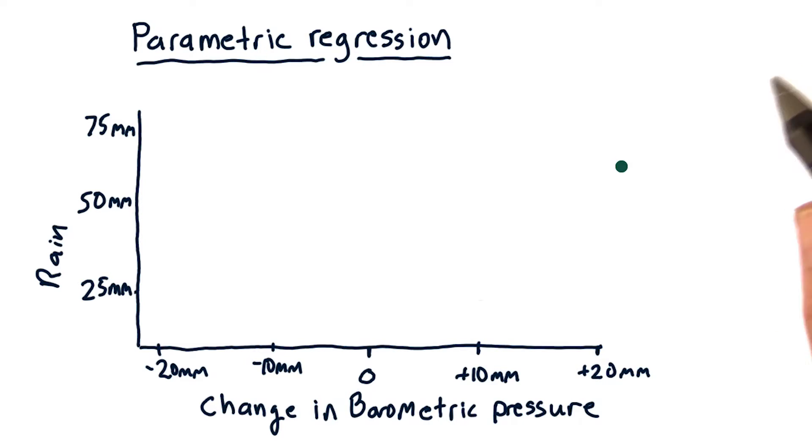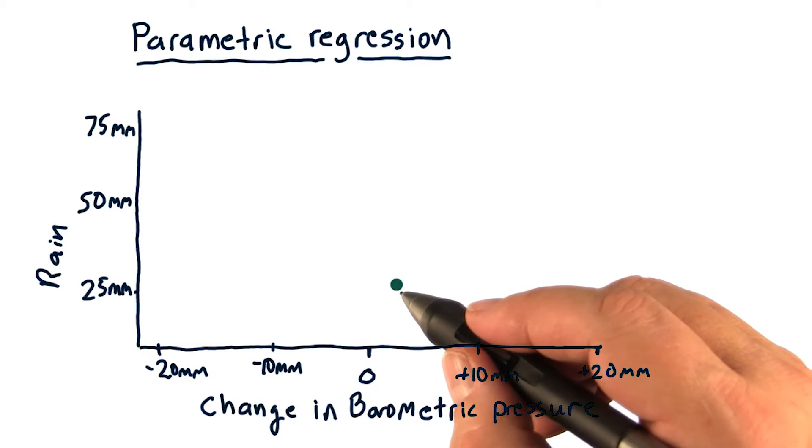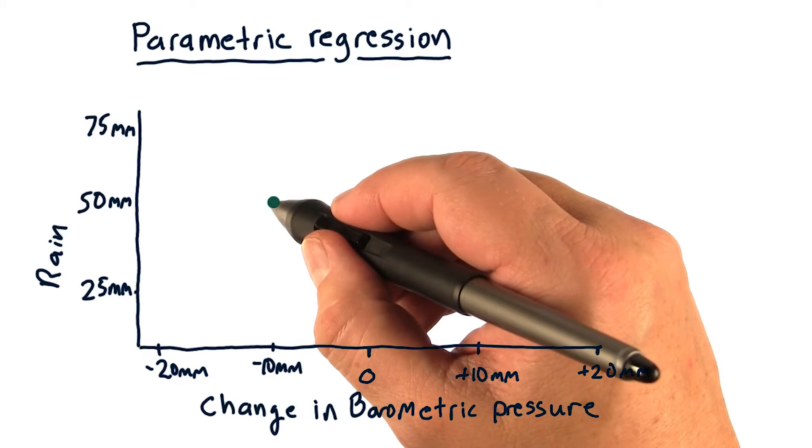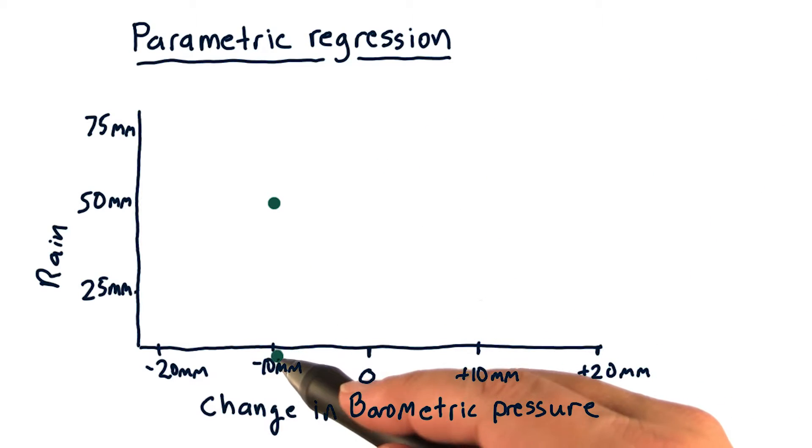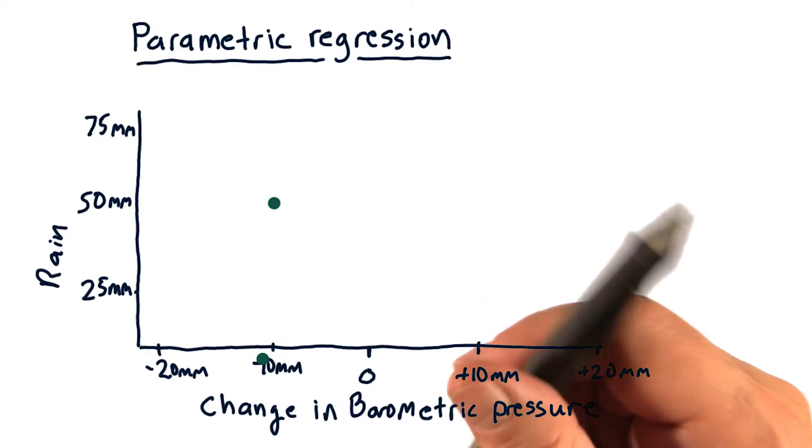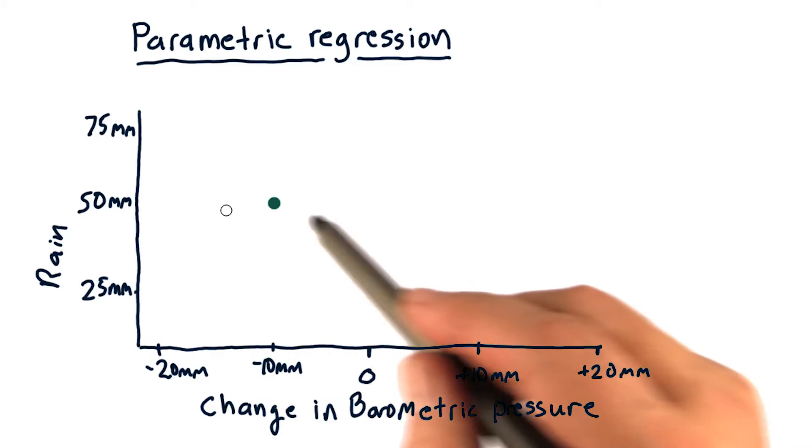So on this scatter plot, each individual point represents one day. Let's consider a particular day, say, here. This means that on this day, the barometric pressure decreased by 10 millimeters and we had 50 millimeters of rain, about two inches.